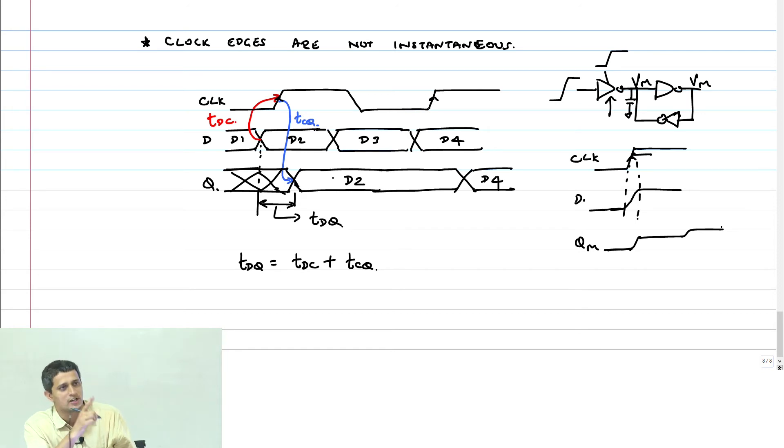If this happens, the QM will actually charge to VM like this for some time and then go high. You can do this in your simulation and check. Bring it closer and see what happens to QM. QM will go to this metastable state for some time and the closer and closer you bring the data change to the clock, this time will keep on increasing.